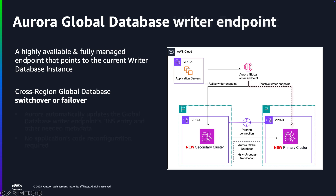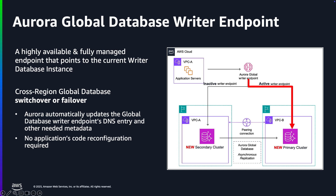As a result, Amazon Aurora MySQL and PostgreSQL automatically updates the Global Database Writer Endpoint's DNS entry and metadata, such as Aurora Global Database status and Instance status, to point to the new Writer instance, which is now located in the cluster on the right-hand side. There are no changes in the application code or configuration files required to connect to the newly promoted Writer instance.